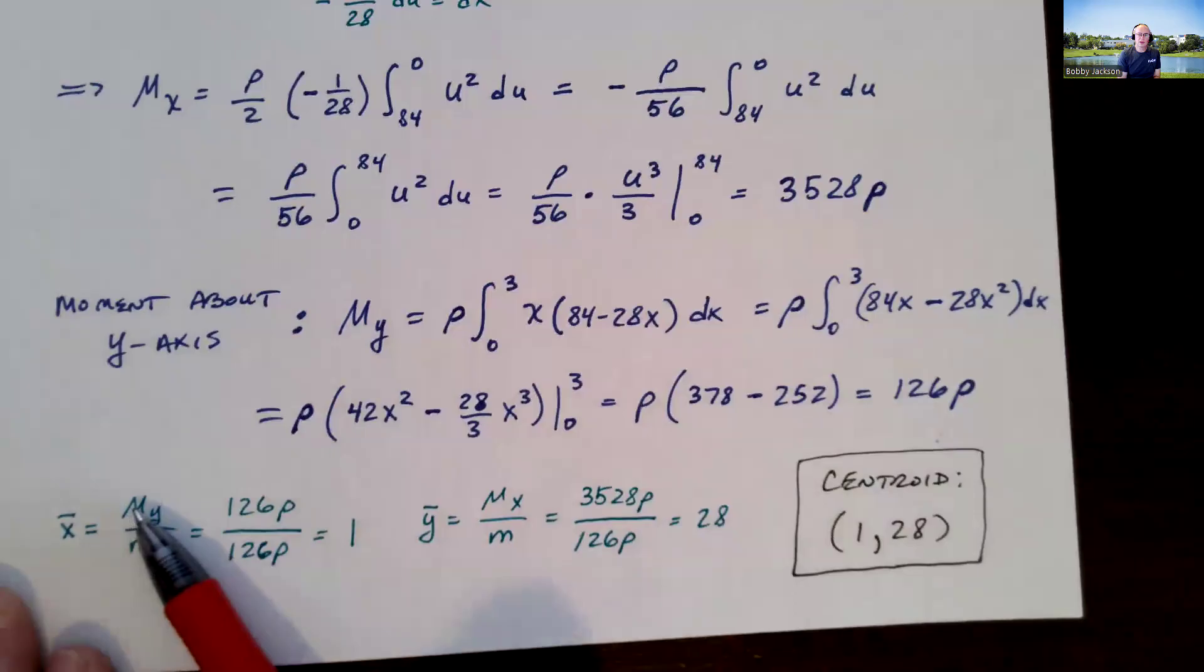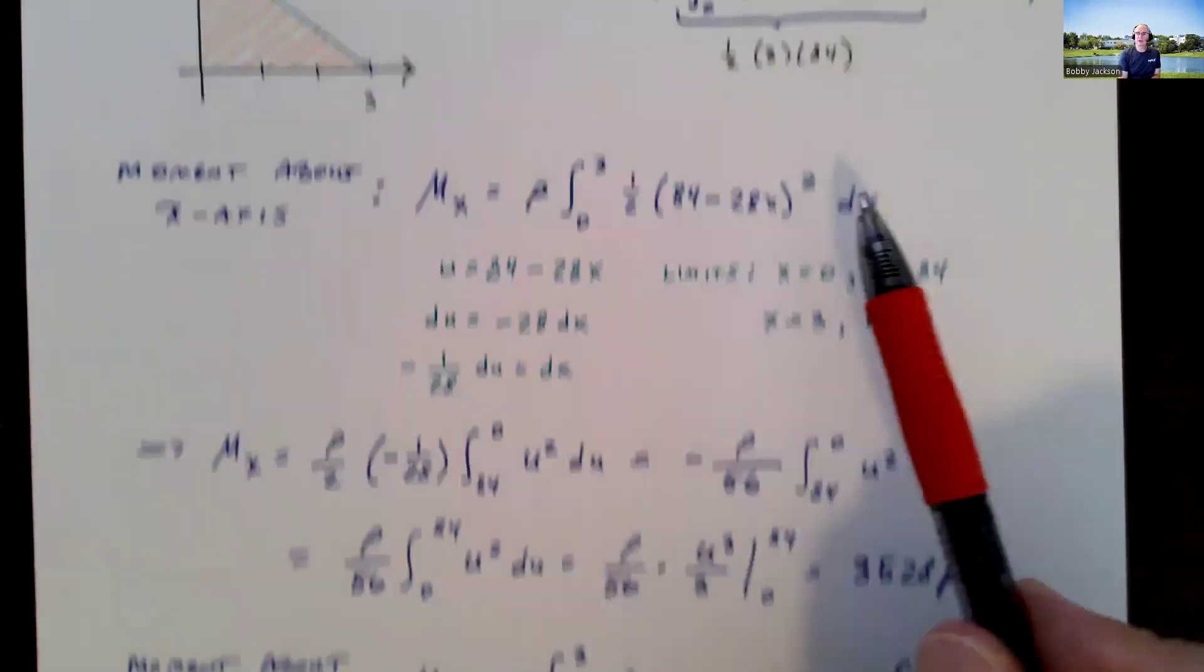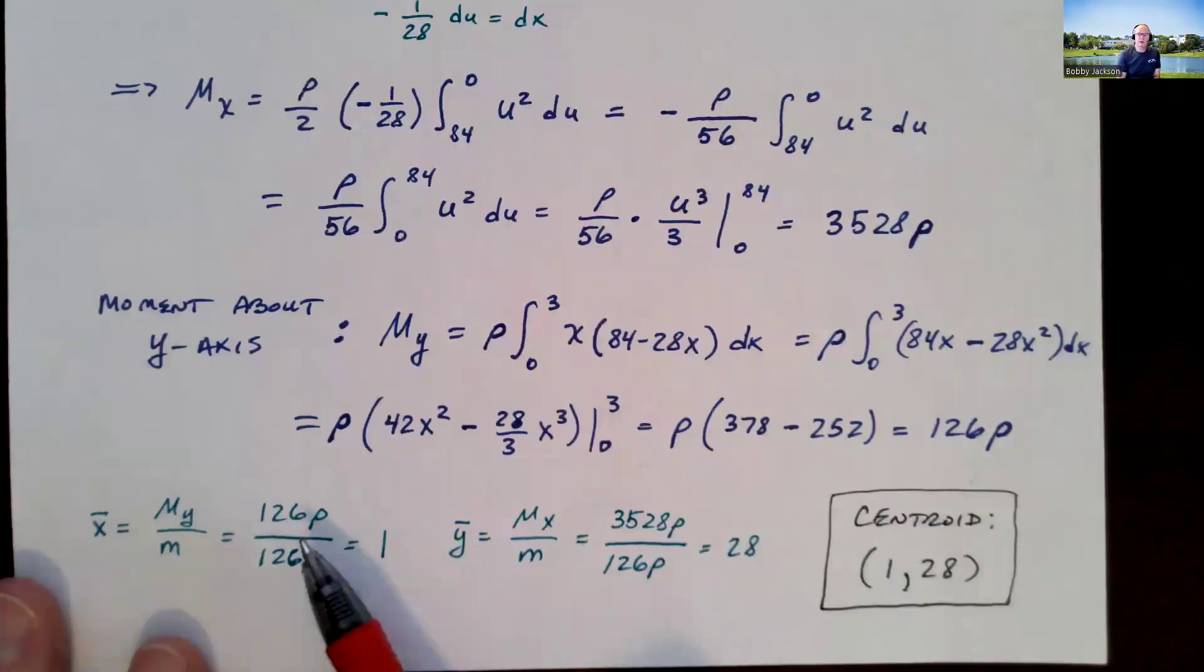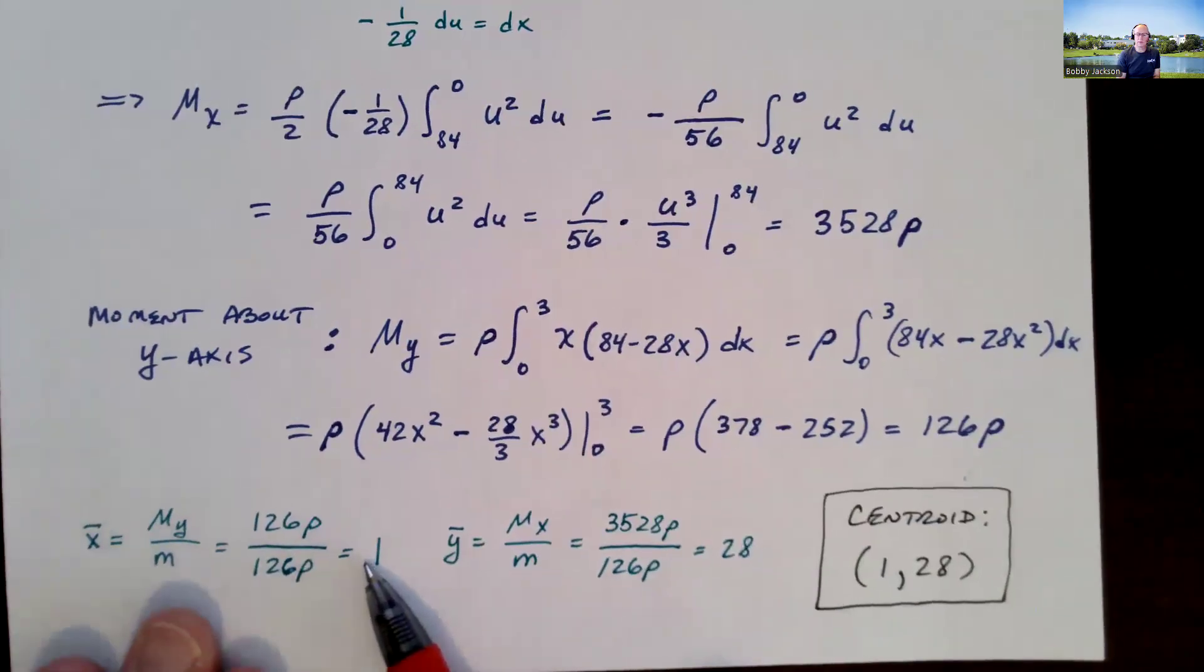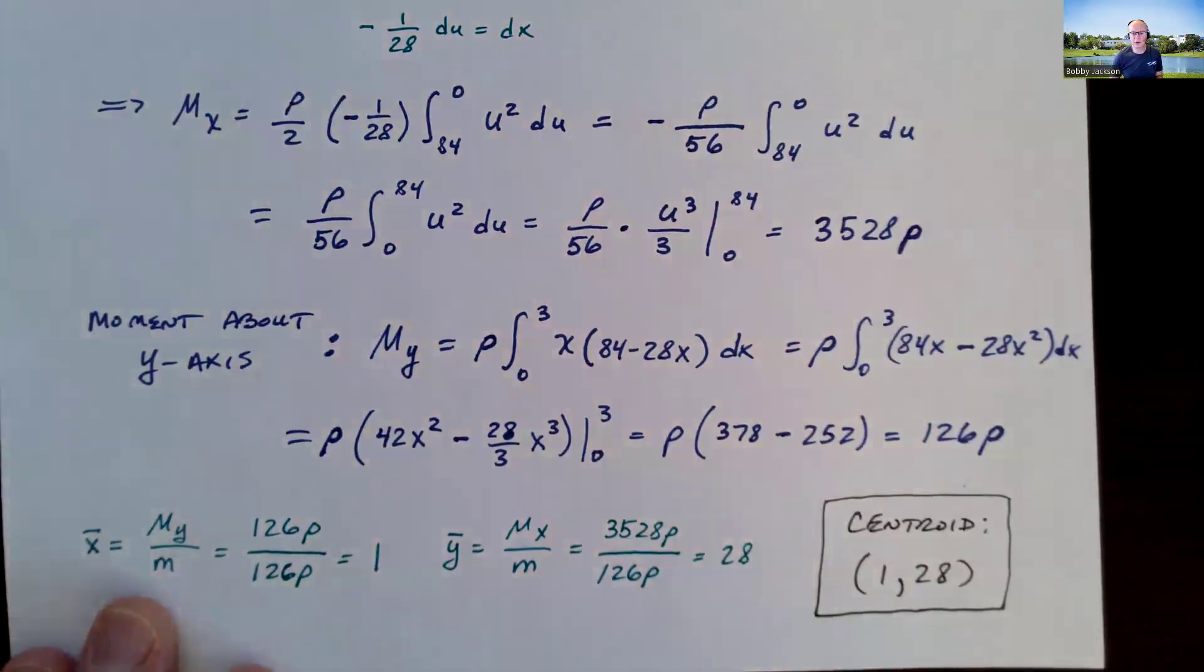The x-coordinate of the centroid is this moment about the y-axis we just found divided by the mass. Notice, this is the moment about the y-axis, and interestingly enough, that's also the mass. And so when I divide, I just get 1. The x-coordinate of the centroid is 1. And the y-coordinate is the moment about the x-axis divided by the mass. The densities, the rhos, cancel. And when I divide, this divides evenly 28 times. And so very nicely, our centroid is at (1, 28) for this problem.